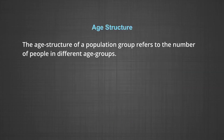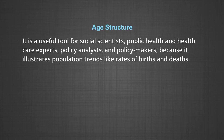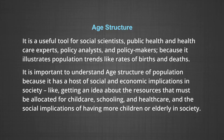We now move on to the next aspect of population composition: the age structure. The age structure of a population group refers to the number of people in different age groups. It is a useful tool for social scientists, public health and healthcare experts, policy analysts and policy makers, because it illustrates population trends like rates of births and deaths. It is important to understand age structure because it has a host of social and economic implications, such as getting an idea about resources that must be allocated for childcare, schooling, healthcare, and the social implications of having more children or elderly in society.